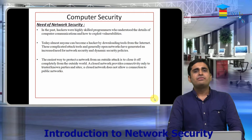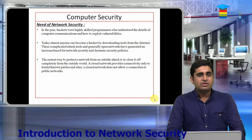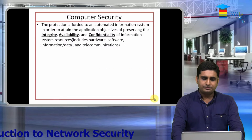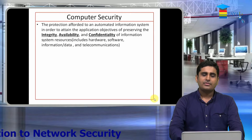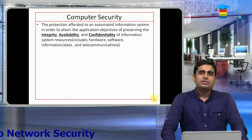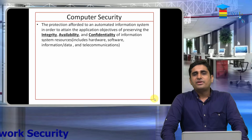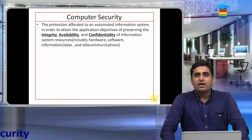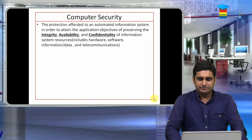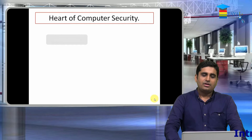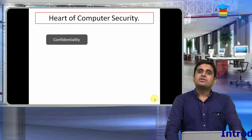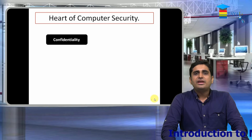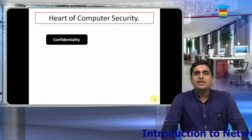To achieve that, there are three things kept in mind, which is also known as the CIA Triad. The CIA Triad consists of Confidentiality, Integrity, and Availability — and these are the heart of computer security.